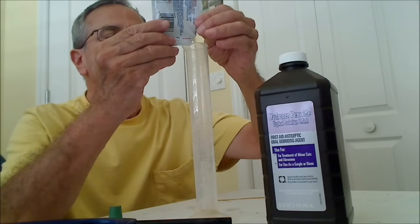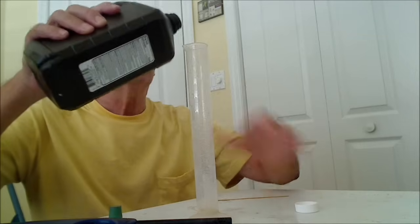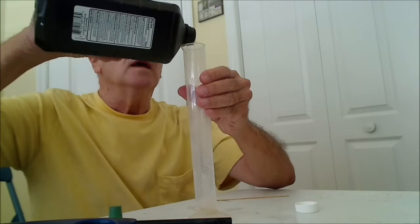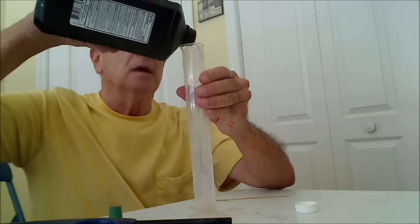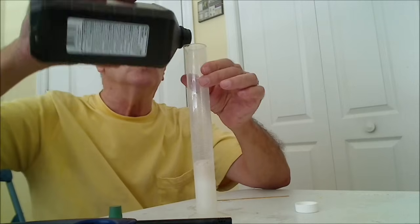I'm going to put a little bit in a flask here. I'm going to add some of the 3% hydrogen peroxide. And right away you can see it's bubbling. Let me add a little more.